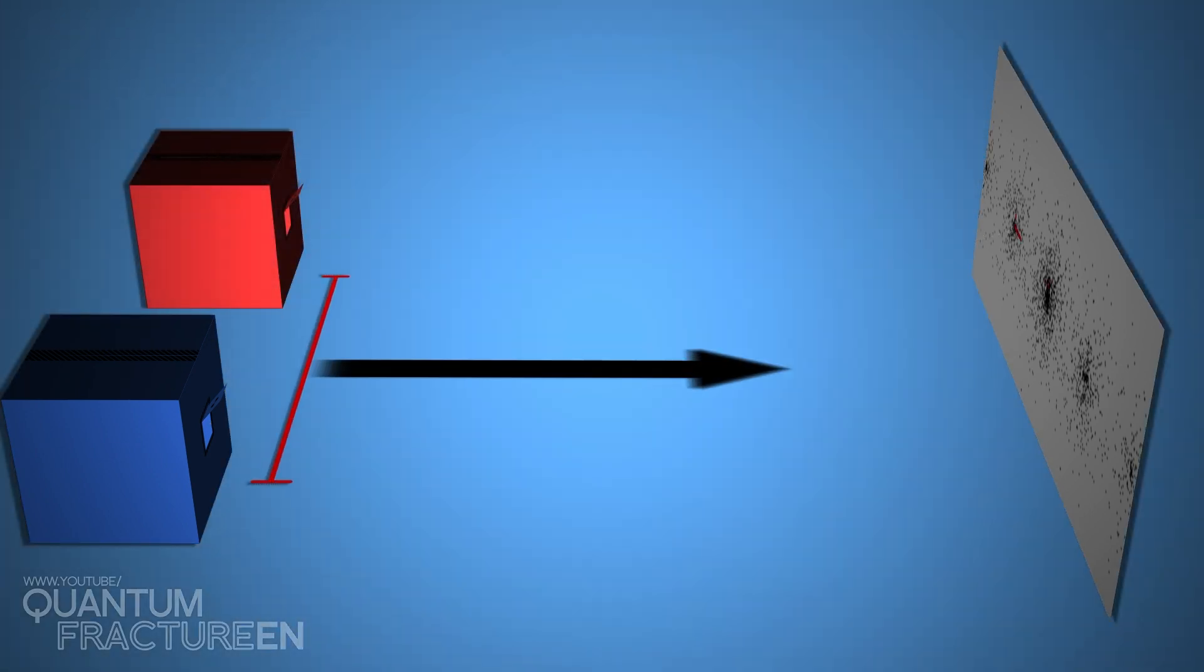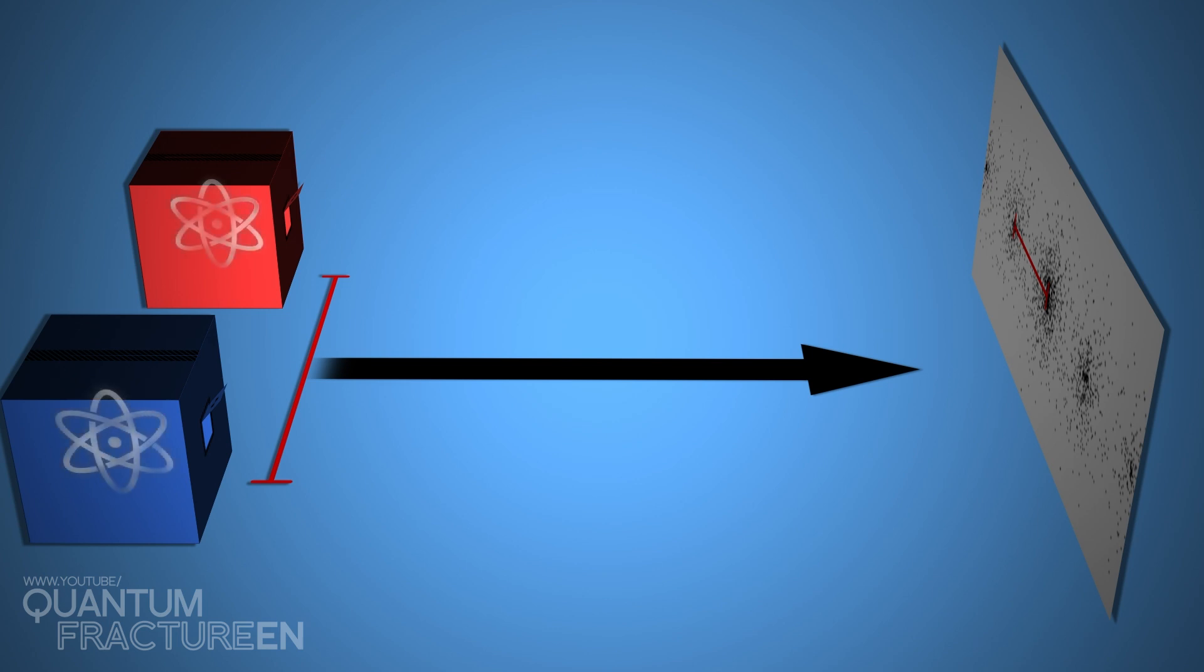Therefore, the only way the distance between the boxes can influence the pattern is if neither box is empty and the atom is in both boxes at once.